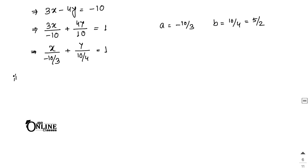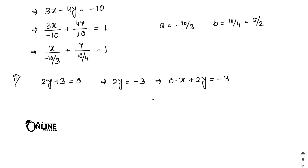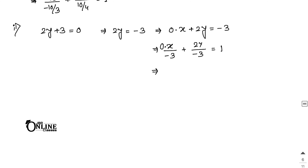For sum 10(ii), the equation is 2y plus 3 equal to 0. Writing it as 0·x plus 2y equal to minus 3 and dividing by minus 3 gives x/0 (undefined) plus y/(minus 3/2) equal to 1. So a equals 0 and b equals minus 3/2, meaning there is no x-intercept and the y-intercept equals minus 3/2.